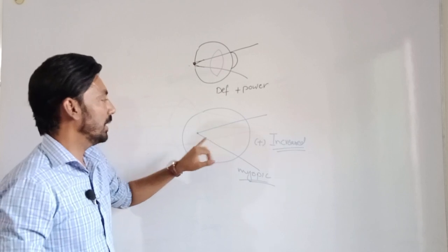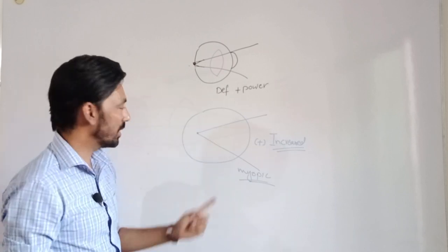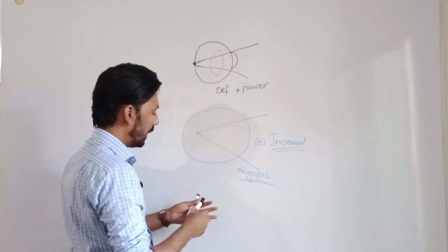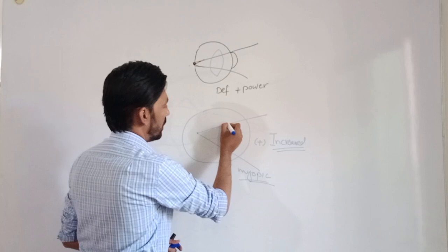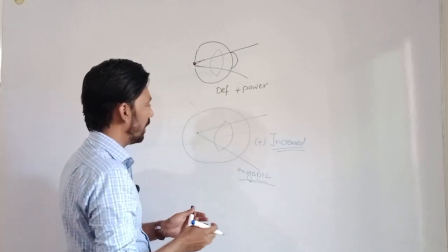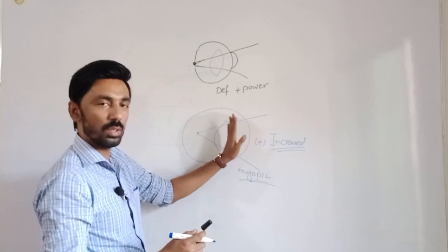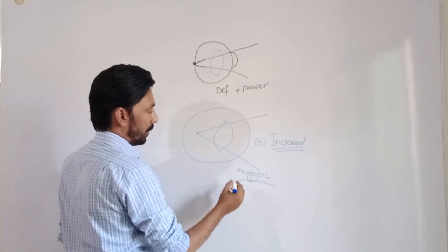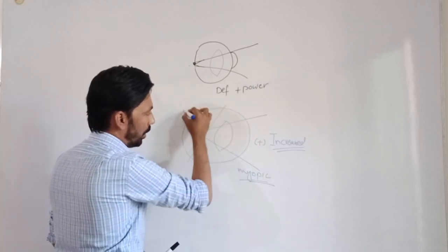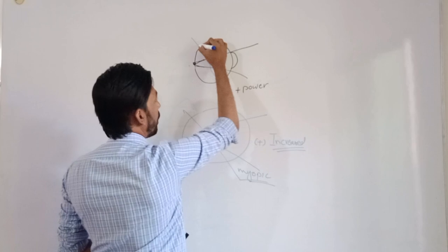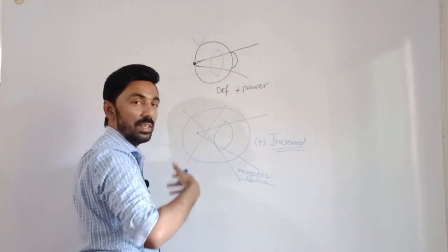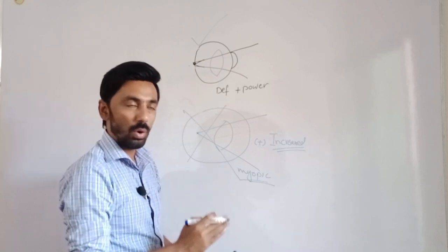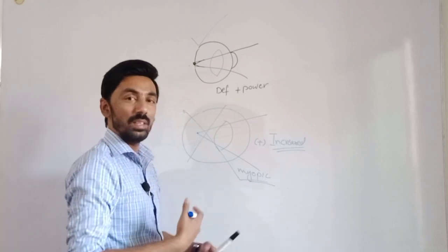An uncorrected hyperope can accommodate and increase its power, hiding its refractive error. But in myopia, the eye does not have the ability to accommodate because plus power is already increased. If a myopic eye were to increase plus power further, light rays would converge even more towards the cornea and lens. So the myopic eye cannot accommodate.